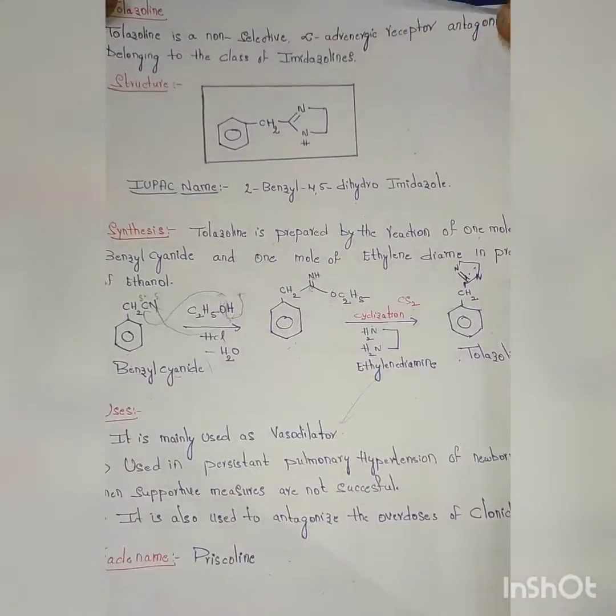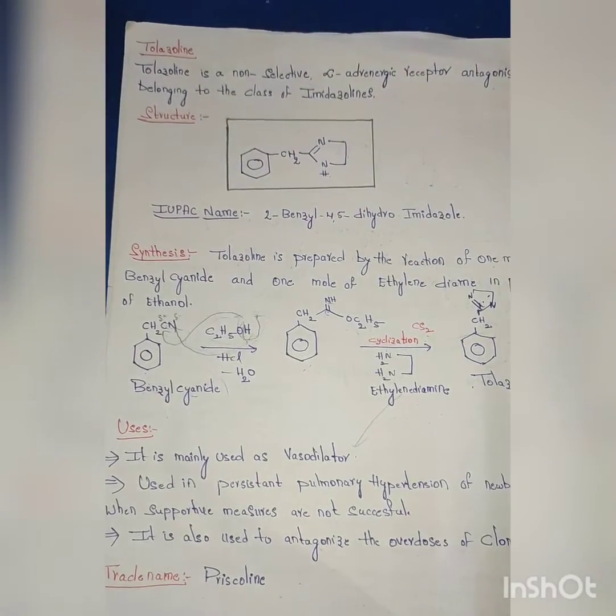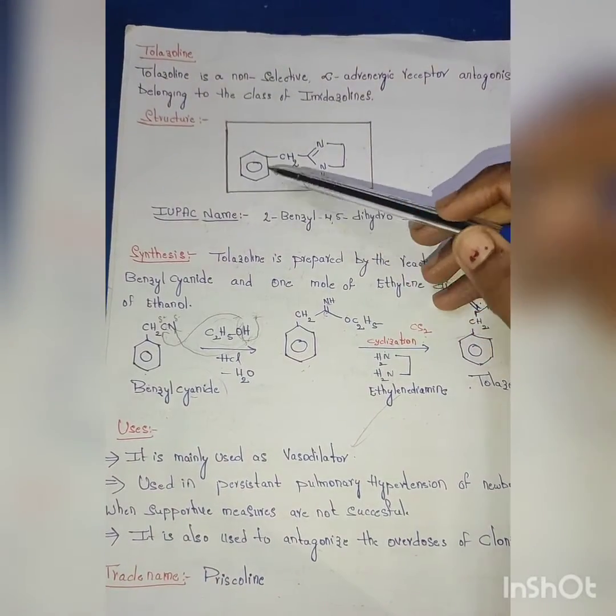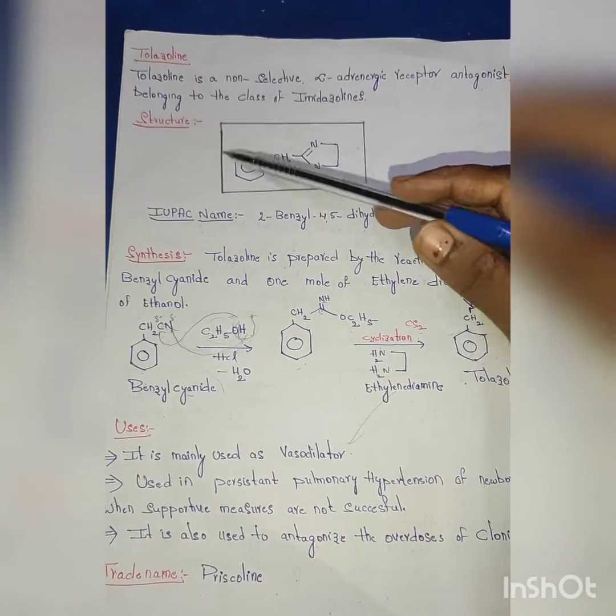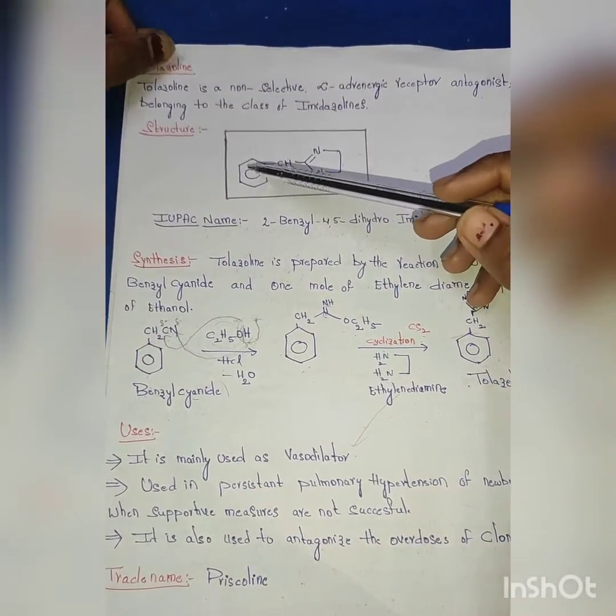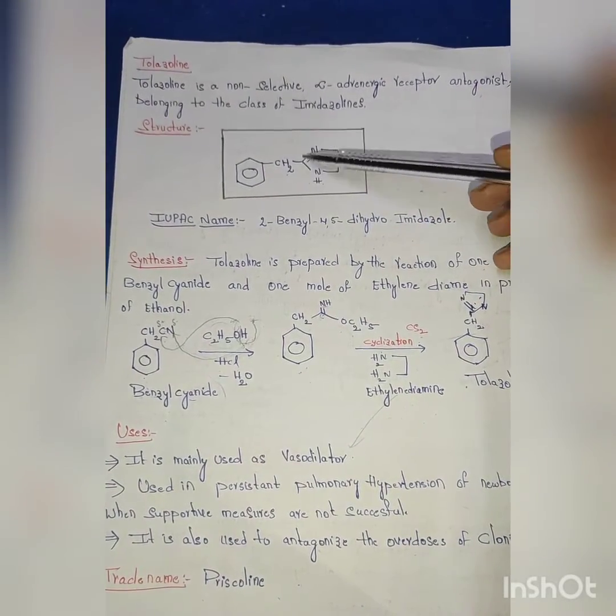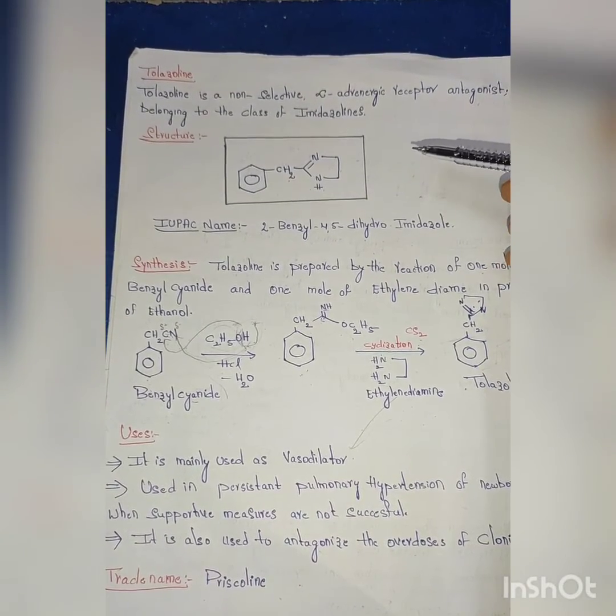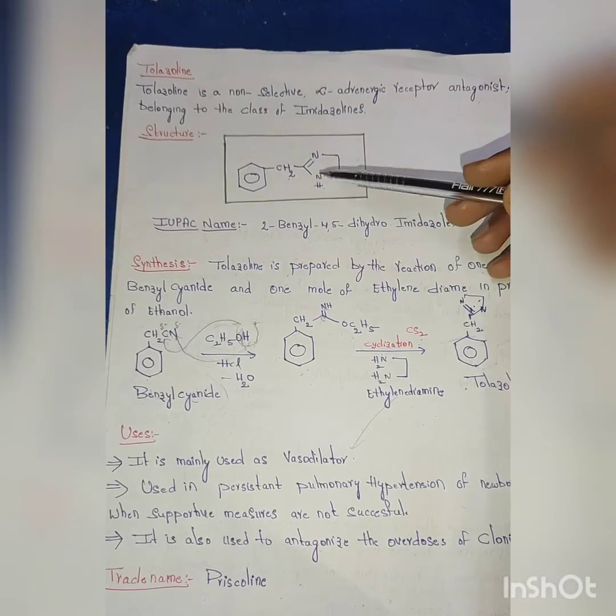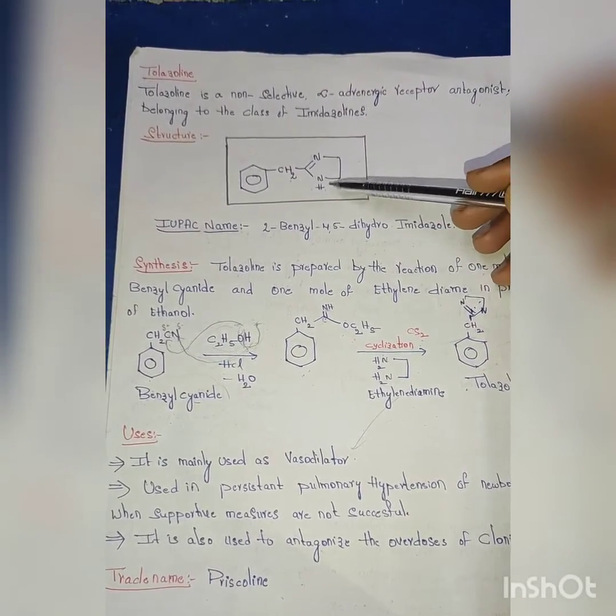The structure of tolazoline: here you can see the structure. First, our drug name is tolazoline - benzene with CH3. This is tolazoline, an imidazole derivative. It is a five-membered heterocycle in which there are two nitrogens at one and three positions with two double bonds at one and two and four and five positions.